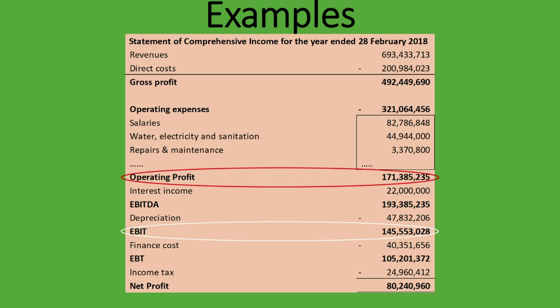Operating profit, on the other hand, has left out other non-operating income — such as interest income — as well as finance cost, income tax, and depreciation. Some companies might leave depreciation out of operating profit if they have invested heavily in fixed assets, but some might include it as operating expenses before arriving at the operating profit. I hope that has made sense. Let me show you another financial statement.